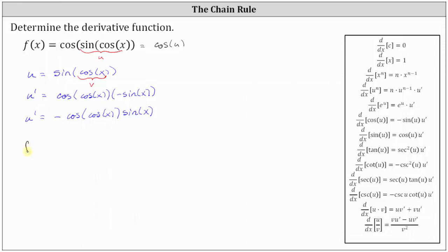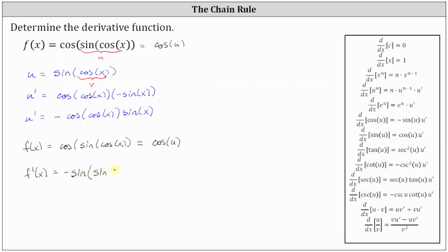Going back to the original function, we have f of x equals cosine of sine of cosine x, which, because u is equal to sine of cosine x, we can think of as cosine u. Therefore, f prime of x equals negative sine u times u prime, which is negative sine of sine of cosine x, times negative cosine of cosine x, times sine x.